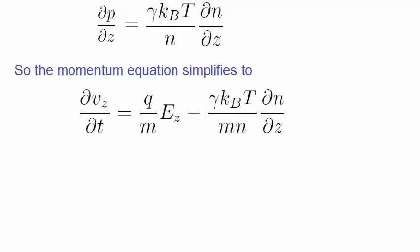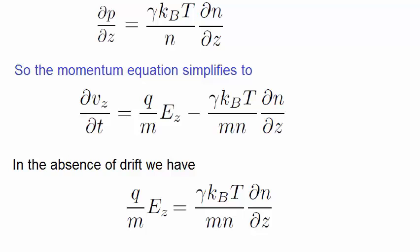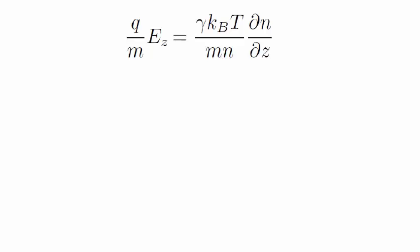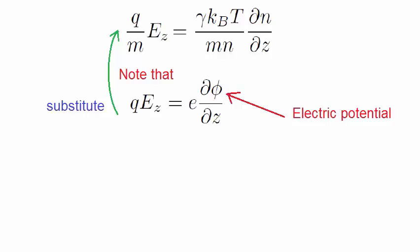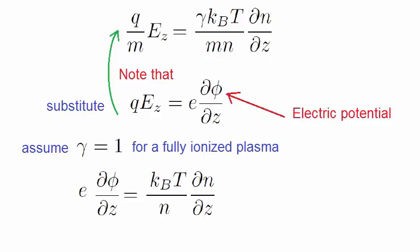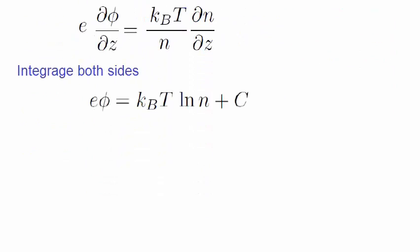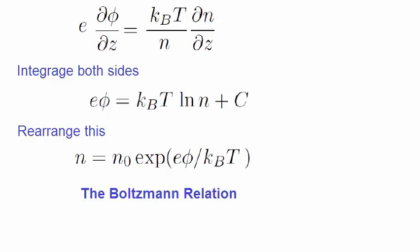In the absence of any drift, that is, vz goes to zero, we end up with this equation. Note that the electric field Ez is given by the gradient of the electric potential, phi. We substitute this back into the equation above, and we assume for simplicity that the γ for a fully ionized plasma is 1. We end up with this differential equation. Now integrate both sides to get this, and rearrange this expression to get this. This is known as the Boltzmann relation, and is used widely in plasma physics. Note that it is not called the Boltzmann equation. That is an entirely different equation.